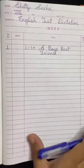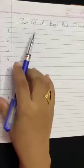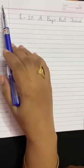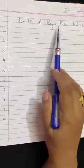After writing this in the index, turn the page, take a new page, put today's date here, write down lesson number 10, A Boy's Best Friend.